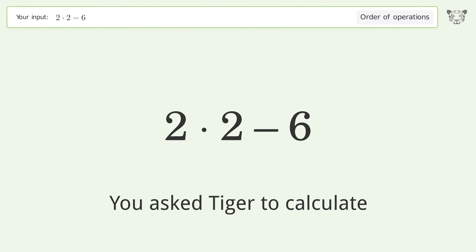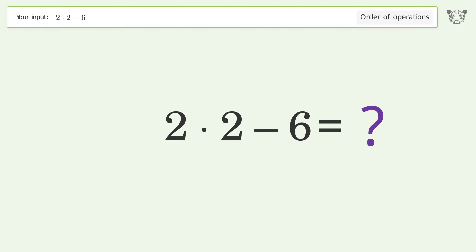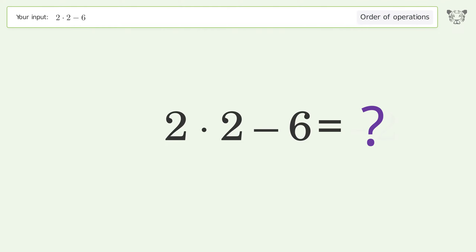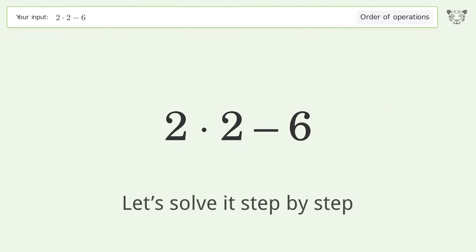You asked Tiger to calculate. This deals with the order of operations. The final result is negative 2. Let's solve it step by step.